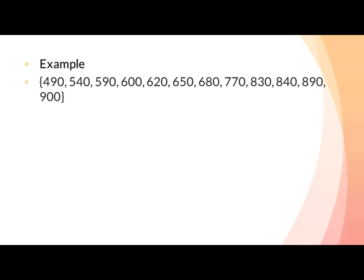اگر data set میں values even ہوں تو دو central values کو plus کر کے دو پر divide کرنا ہے — تو ہم count کرتے ہیں: 1, 2, 3, 4, 5, 6, 7, 8, 9, 10, 11, 12 — تو ہمارے پاس جو values ہیں وہ even ہیں۔